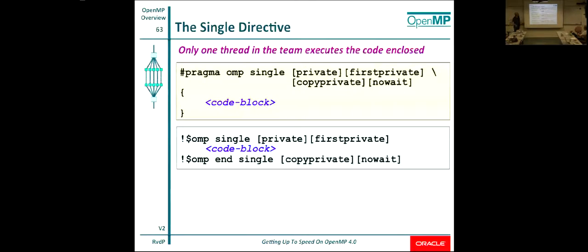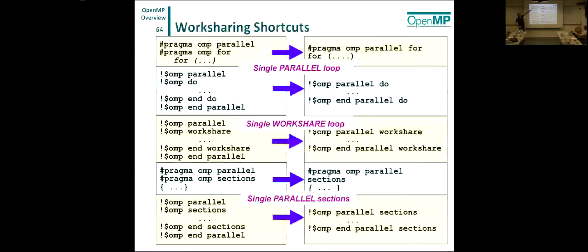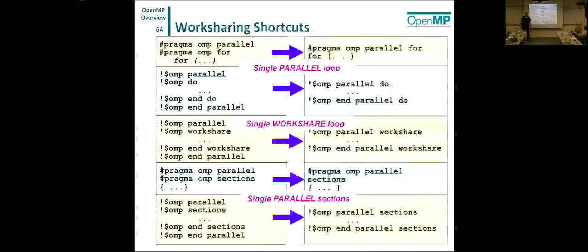There are work-sharing shortcuts: instead of writing 'pragma OMP parallel' with just one for loop, you can shortcut to 'OMP parallel for'. Same in Fortran, and similarly for sections. Beyond saving typing, this is a simpler hint to the compiler, enabling more optimization. A full parallel region is heavy; with the shortcut the compiler knows there's only one loop and can optimize accordingly. Use these shortcuts as a way to streamline performance.